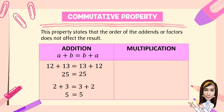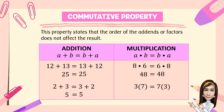So therefore, the order of the addends does not affect the result. Even if we rearrange the addends, we still come up with the same answer. For multiplication, a times b is equal to b times a. For example, 8 times 6 is equal to 6 times 8. The product of 8 times 6 is 48, and the product of 6 times 8 is also 48. Another example: 3 times 7 is equal to 7 times 3. The product of 3 times 7 is 21, and 7 times 3 is also 21. So therefore, the order of the factors does not affect the result.